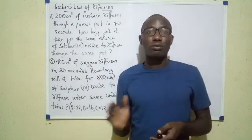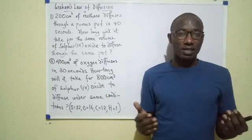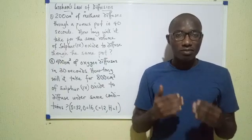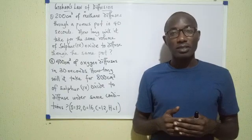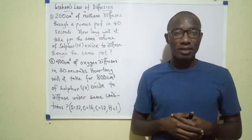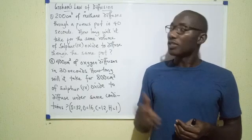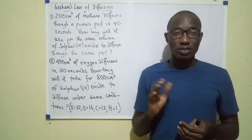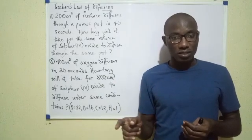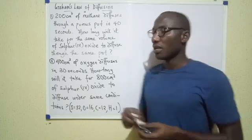Now Graham was able to observe the relationship between the mass of a gas or the density of a gas and the rate at which the gas moves. As part of the kinetic theory, we already talked about the fact that molecules of a gas have the ability to move. So according to Graham, there's a simple relationship between the rate at which a gas diffuses and its density.